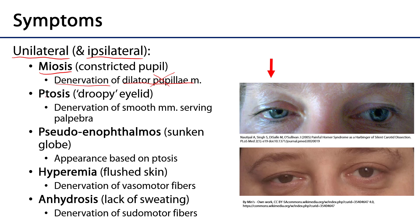The next possible symptom is ptosis, or a droopy eyelid. The muscles which control the patency of the palpebral fissure have smooth muscle components to them, and there is near-constant sympathetic stimulation to keep the eyes open. When those fibers to those smooth muscle portions are denervated, the eyelids can droop, as we can see in these photographs.